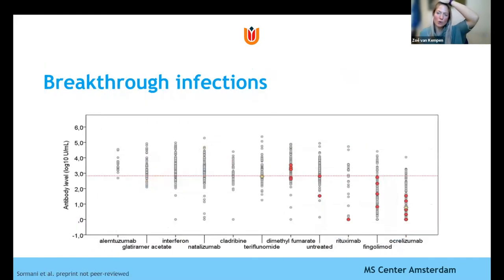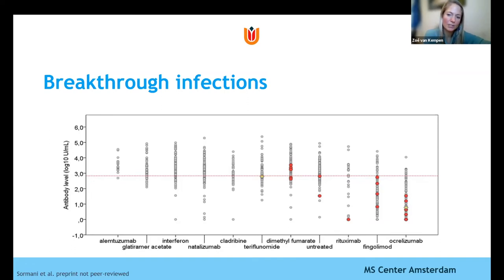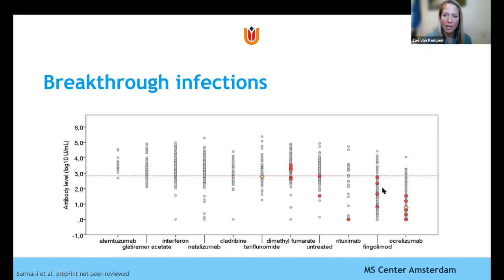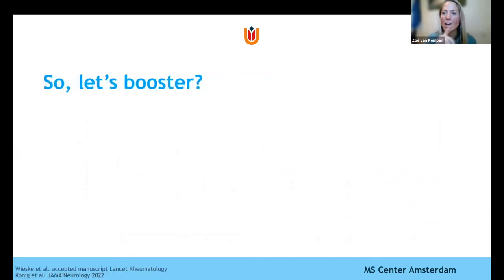This is a very recent report from Sormani et al., who has a very large cohort of MS patients and studied breakthrough infections alongside antibody titers. In 23 breakthrough infections, 20 cases were seronegative — so below the cutoff — indicating that if patients do not have seroconversion after vaccination, it increases the risk of breakthrough infections. So we thought we must booster these patients. In October 2021, the WHO and the Netherlands decided that patients on anti-CD20 therapies and S1P modulators should receive an extra booster. And now they have received their fourth vaccination.